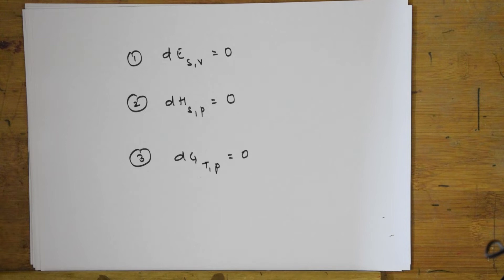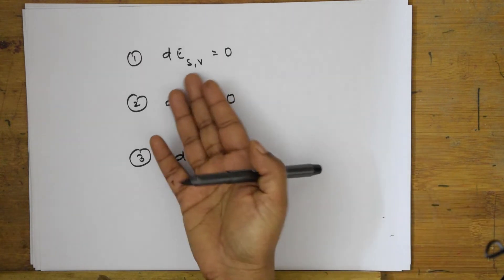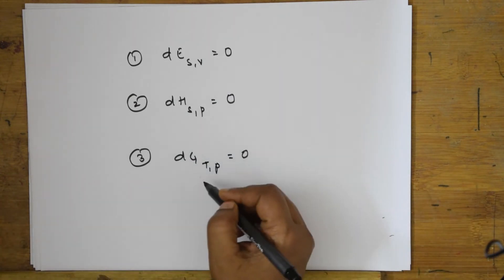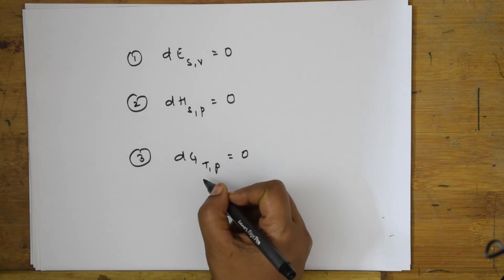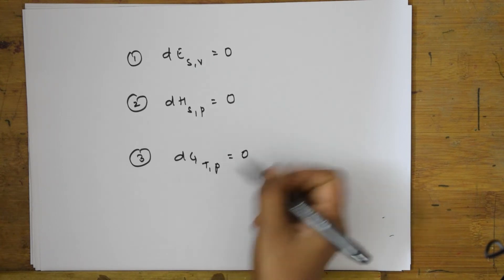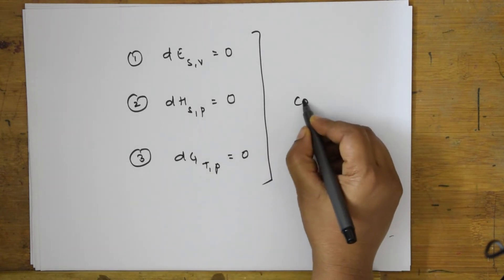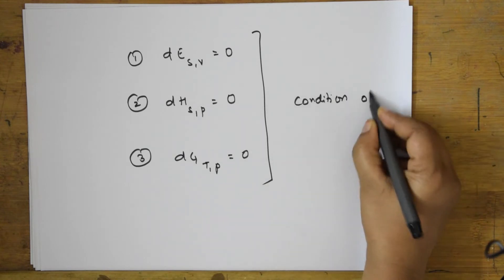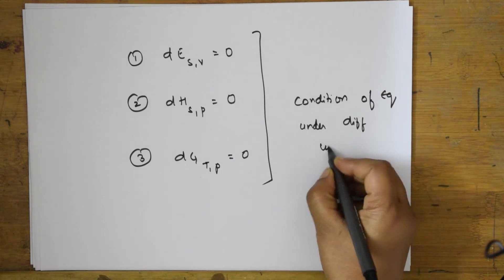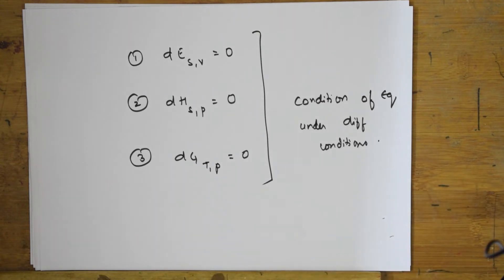All these equations represent the condition of equilibrium under different conditions. The third one — DG at constant T and P equals zero — is very important, because most thermodynamic processes occur at constant temperature and pressure. They may ask you this in the exam, so you should be clear with this concept. Now let us learn the next important thing: the criteria for spontaneity and Gibbs free energy.